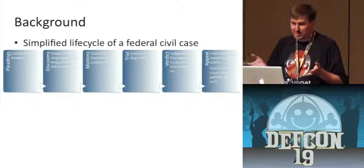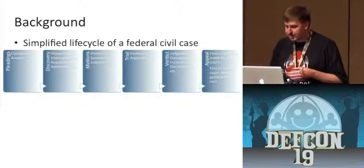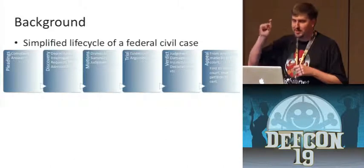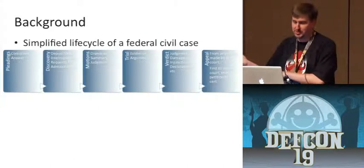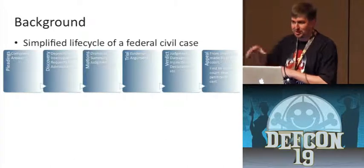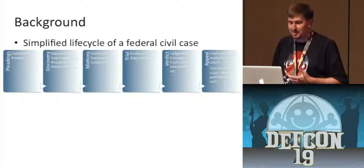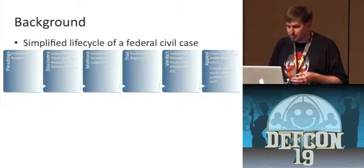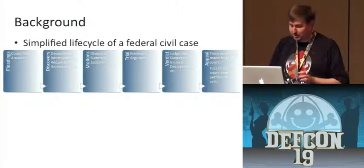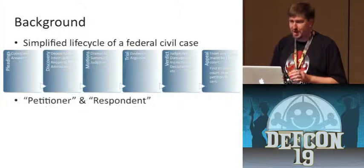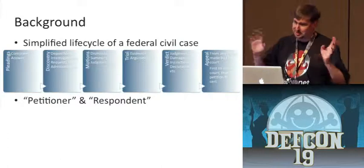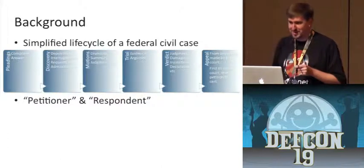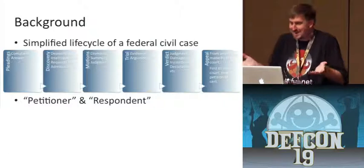When we appeal, you can appeal from any final judgment by the court. If your case is dismissed at the motion stage, you can appeal that. In fact, a lot of the cases the Supreme Court takes come from summary judgment. At the appeal stage we no longer say plaintiff and defendant — we say petitioner and respondent. The petitioner says the court got it wrong; the respondent says the court was totally right.